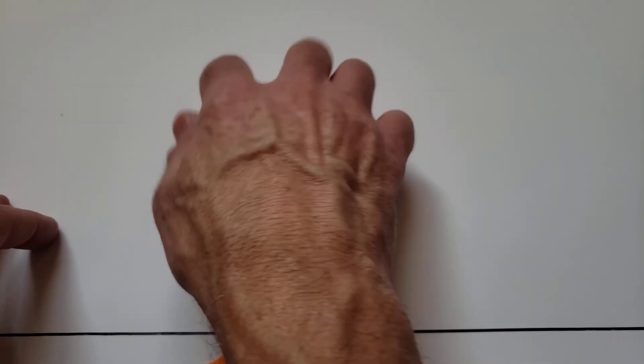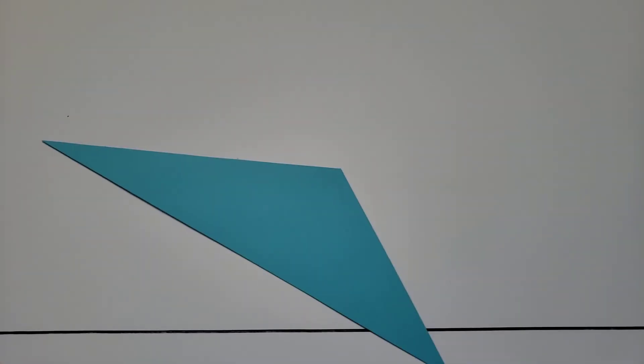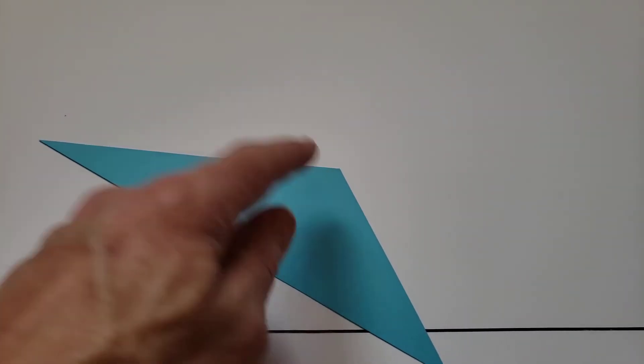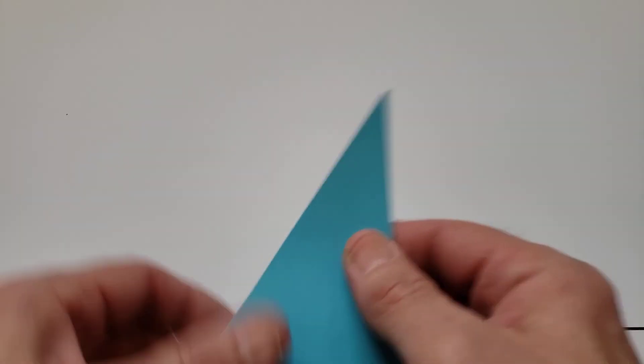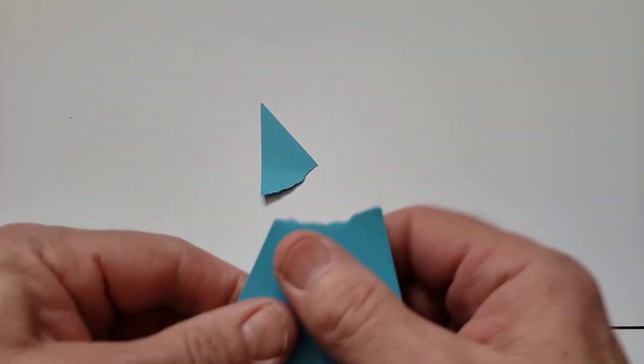And of course, here's one more. Get rid of those. This is an obtuse triangle. We have an angle bigger than 90 degrees. So if I do the same thing for this one...